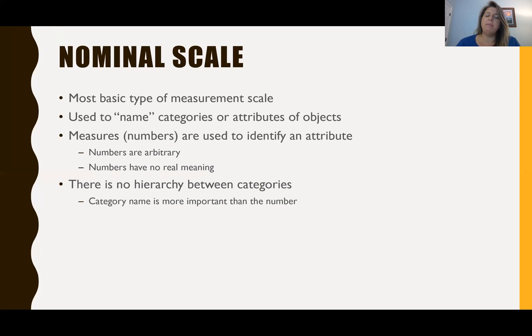The category name is more important than the number. So for example, a gender question, the measurement scale would be something like 1 equals male, 2 equals female, 3 equals prefer not to answer. And we use the numbers just because it makes it easier for us to analyze. It makes it easier for the software package to analyze. But really for nominal scales what matters is male, female, or prefer not to answer.